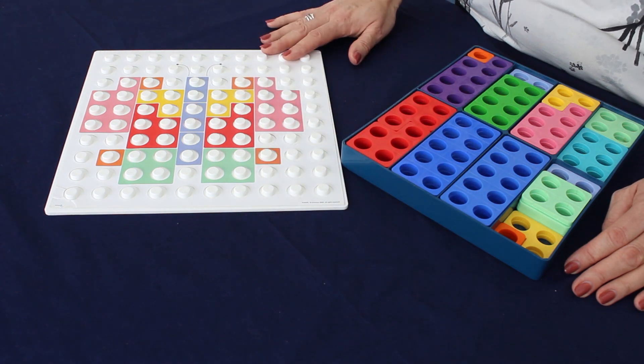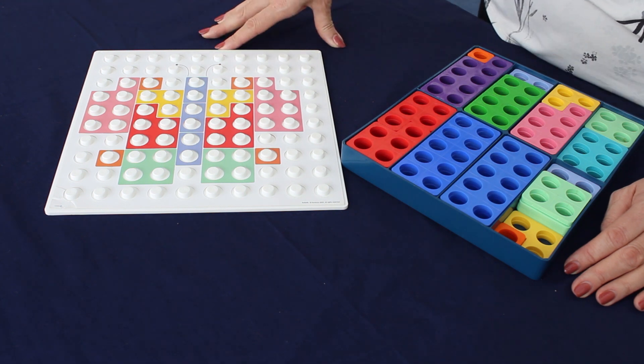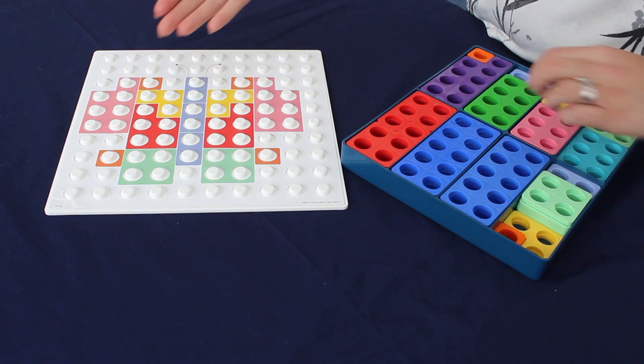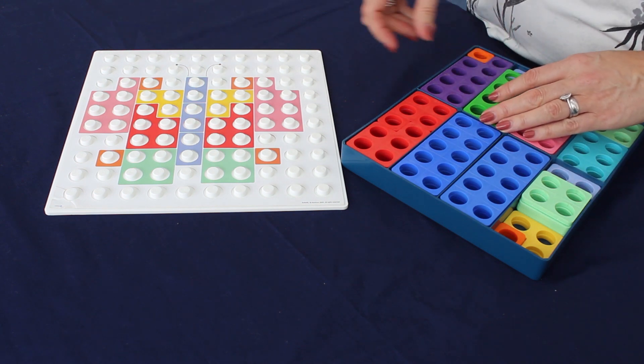Then you would ask the children to place them on the board. Then you would give them some extra ones, so you might put in a green number 8 that they don't need, having to do sorting and matching.